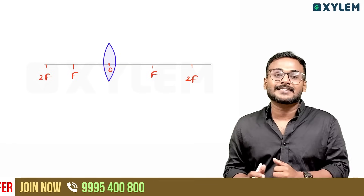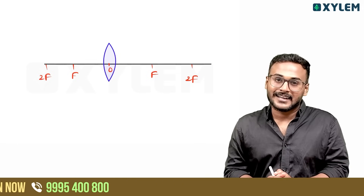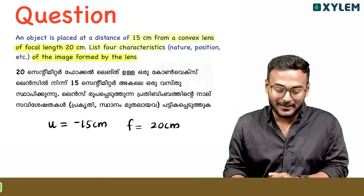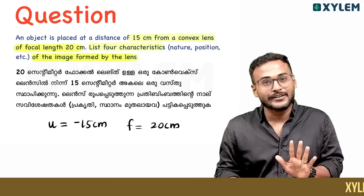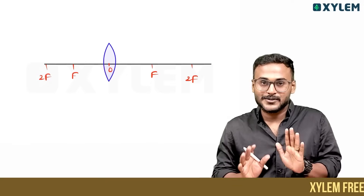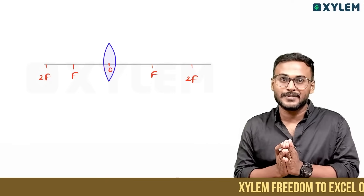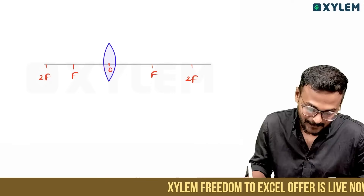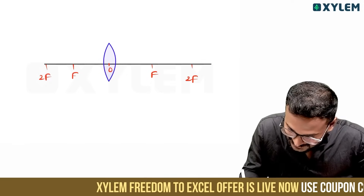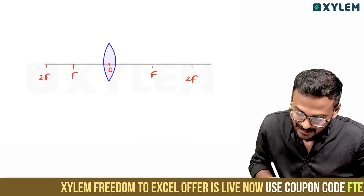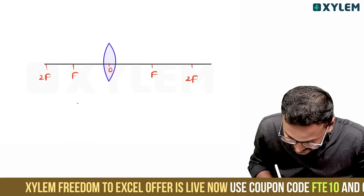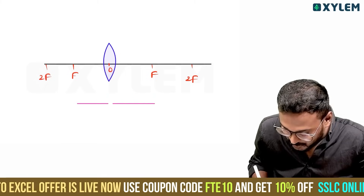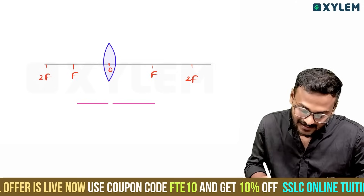How much is the focal length? That is the optic center. The focal length is 20cm, so the focal points are 20cm on each side. Two F is 40cm on each side.